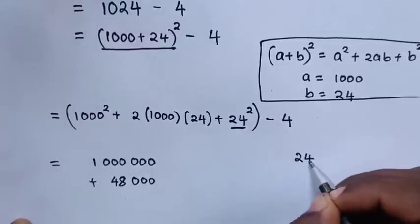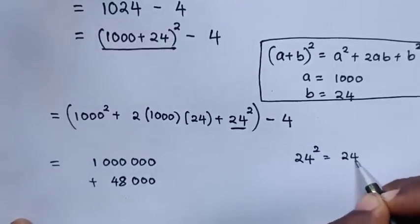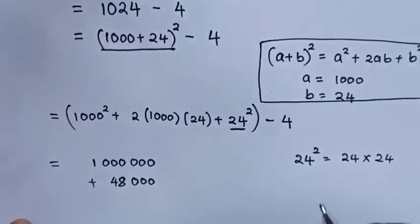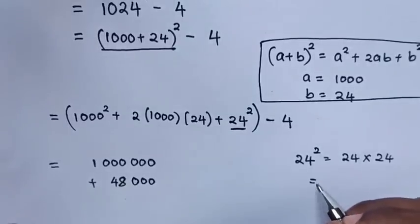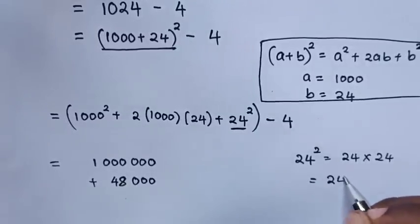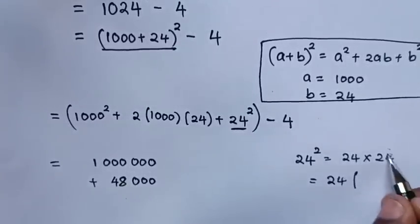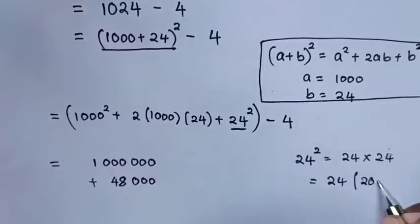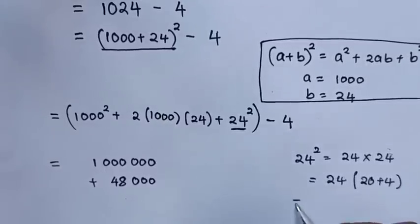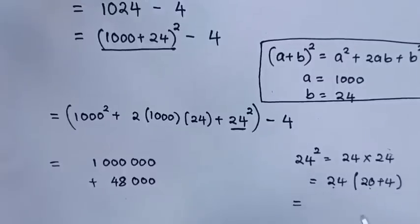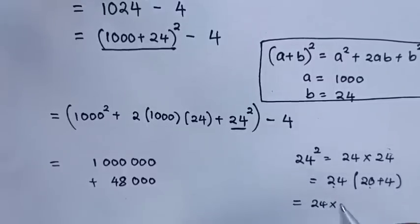We know that 24 square is 24 times 24. This will equal 24 times 24, same as 20 plus 4. So it will be 24 times 20 bracket plus 24 times 4.